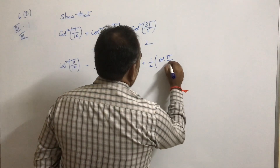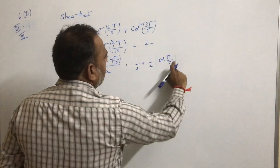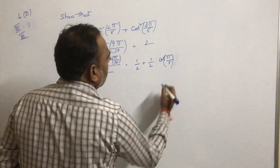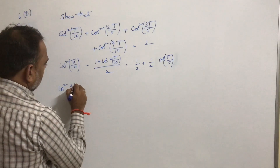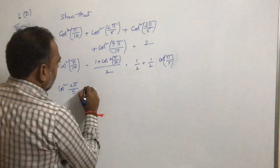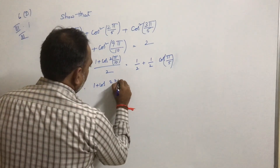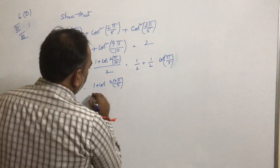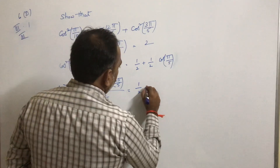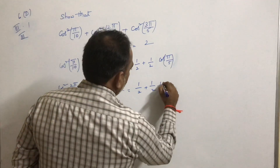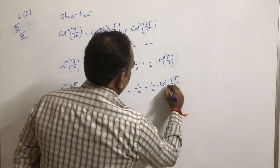Take the second term: cos²(2π/5). This equals (1 + cos(2 × 2π/5))/2, which is equal to 1/2 + (1/2)cos(4π/5).